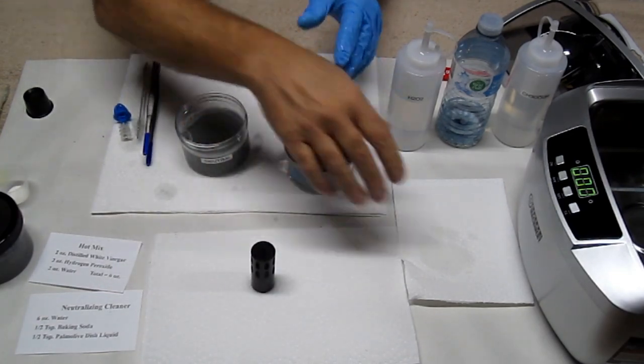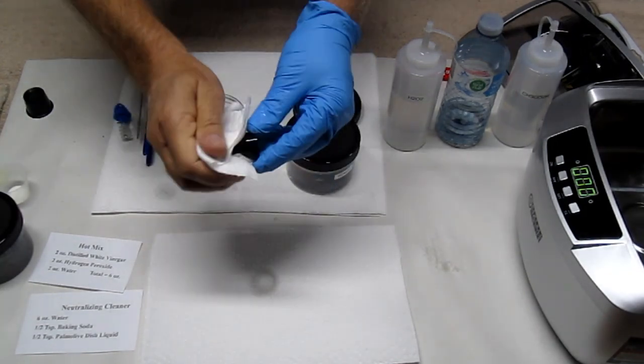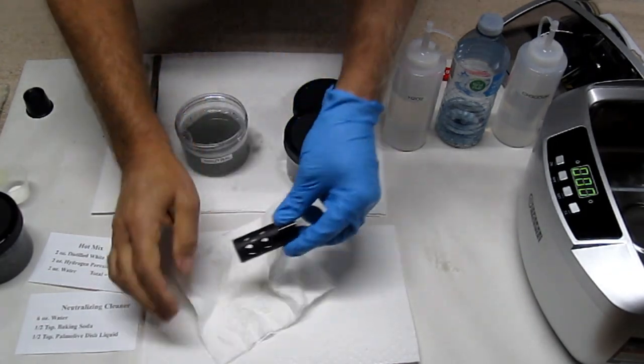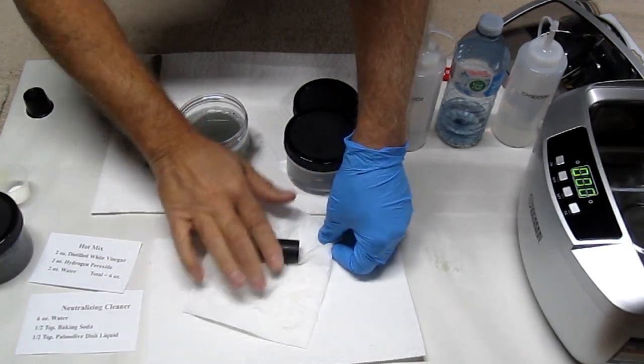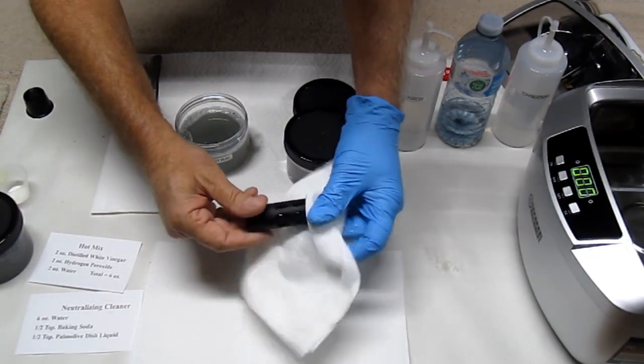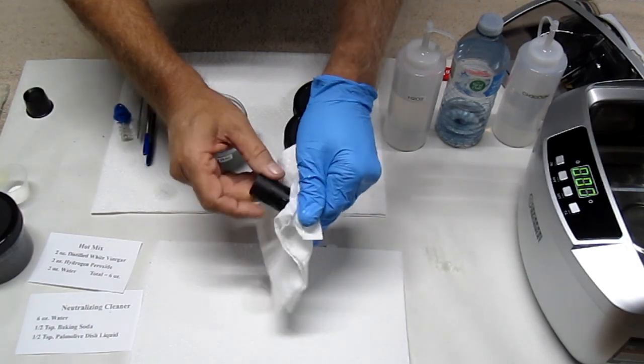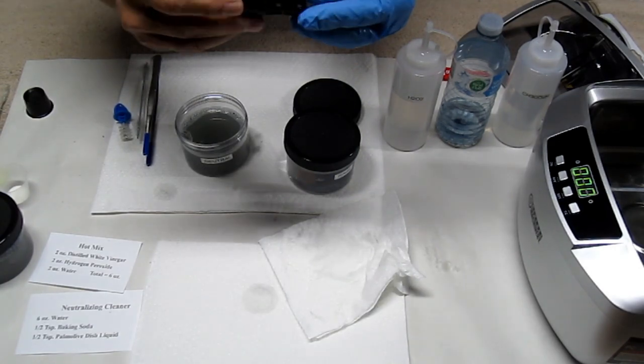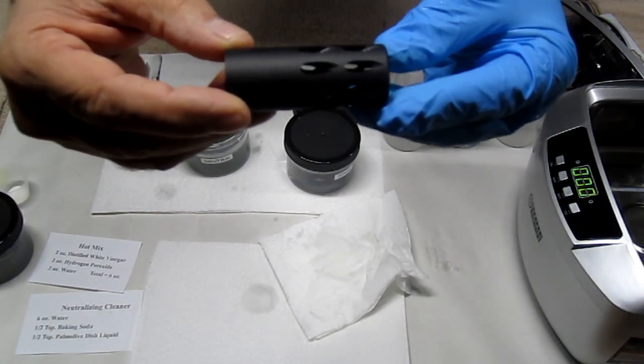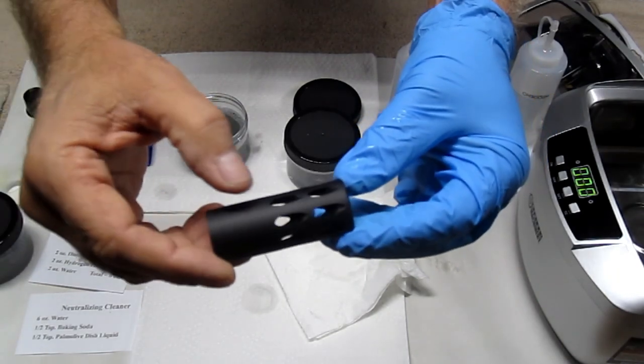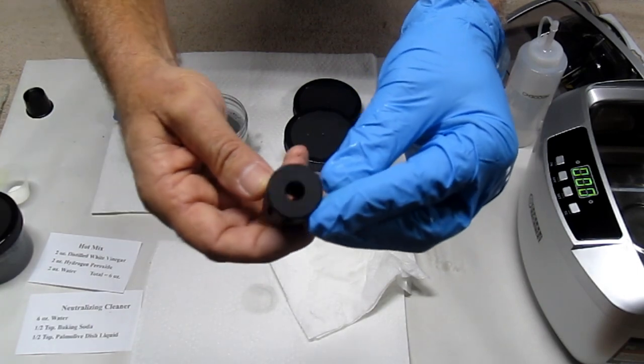And let's take a close-up look at this. Just going to get the water off of there so we can see what the color looks like on that compensator. As you can see, it's pretty much removed all that carbon haze. Notice how nice and matte finish the anodized coating is.